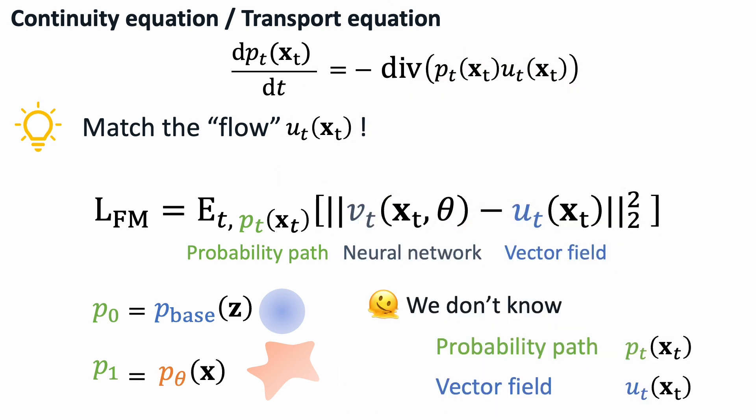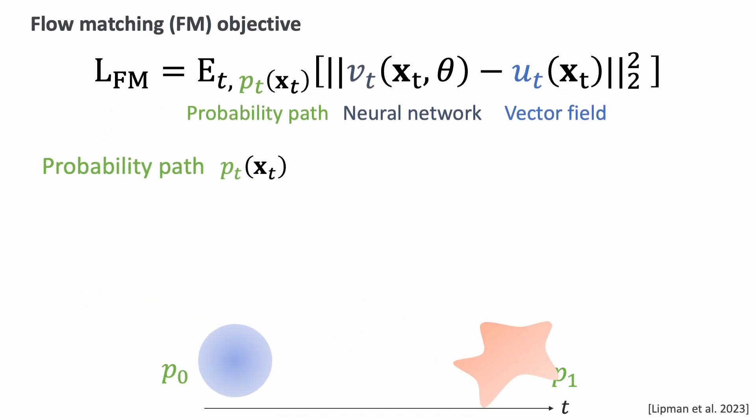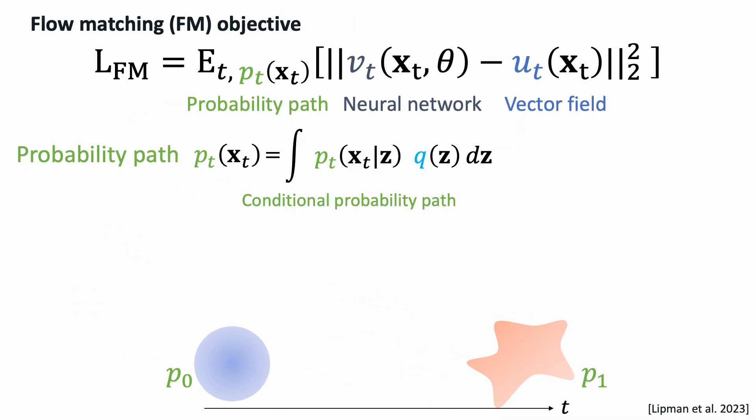But something terrible happened. We don't know what the probability path or the vector field is. If we know the vector field directly, why do we need this neural network? The trick is creating training data for the probability path and the vector field using conditioning. Here, we express the marginal probability path as a mixture of conditional probability paths that vary with some conditioning variable z.